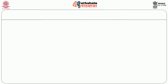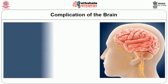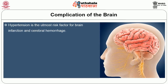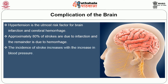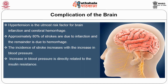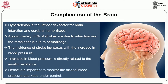Now let us see the complications in the brain. Hypertension is the utmost risk factor for brain infarction and cerebral hemorrhage. Approximately 80% of strokes are due to infarction and the remainder is due to hemorrhage. The incidence of stroke increases with an increase in blood pressure, which is directly related to insulin resistance. Hence, it is important to monitor arterial blood pressure and keep it under control.